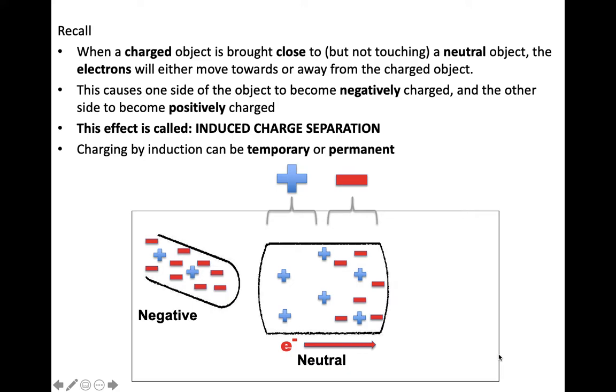It can either be temporary or permanent. So as we saw in our animation here, we have a negative object being brought towards a neutral object and the electrons are moving away from the negative object because it has more electrons than protons or positive charges and it wants to move away because it is repelled by those negative charges.